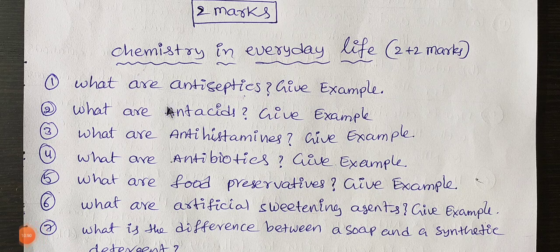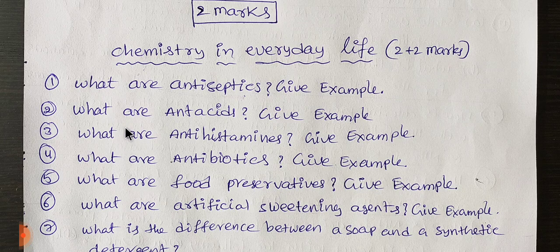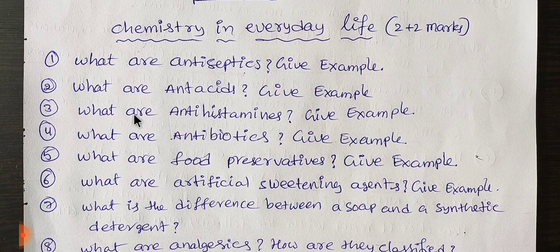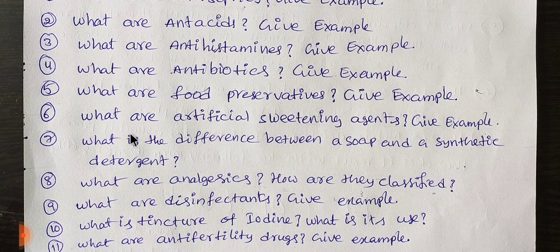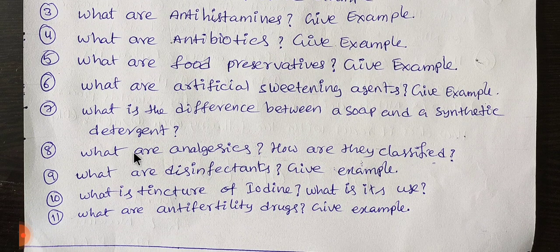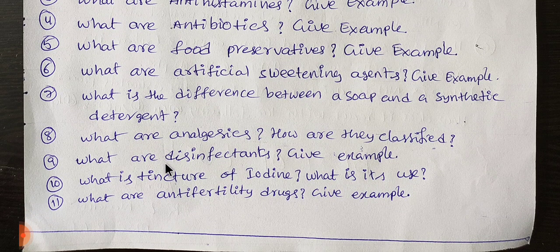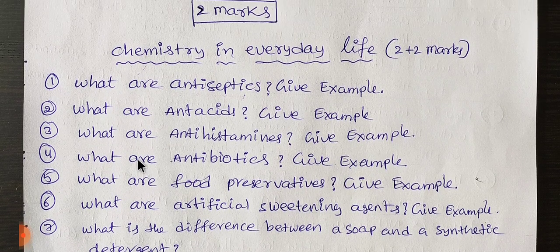Students, if you have 2 marks in your chemistry, you will have 2 marks in your life. If you have 10 questions, you will be able to answer 2 marks. The 2-mark questions include: what are antiseptics — give example; what are antihistamines — give example; what are antibiotics; what are food preservatives — give example; what are artificial sweetening agents; what is the difference between soap and synthetic detergent; what are analgesics and how are they classified; what are disinfectants — give example; what is the tincture of iodine and its use; what are anti-fertility drugs — give example. Students, you have 11 two-mark questions in your class.